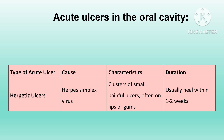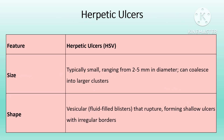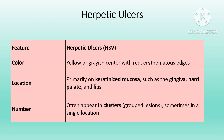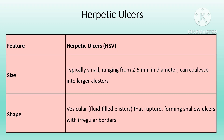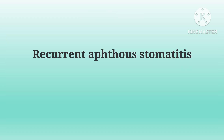Herpetic ulcers are caused by the herpes simplex virus, presenting with small painful vesicular lesions primarily on keratinized mucosal surfaces like the lips and palate. These ulcers tend to heal within a few weeks but may recur, particularly during stress or other triggers. Systemic symptoms such as fever, swollen lymph nodes, and the clustering of lesions are key diagnostic indicators for herpetic lesions.